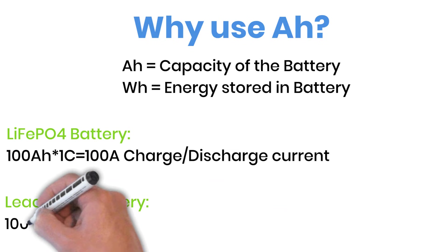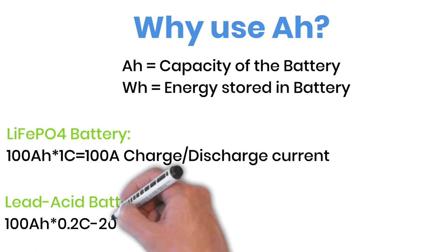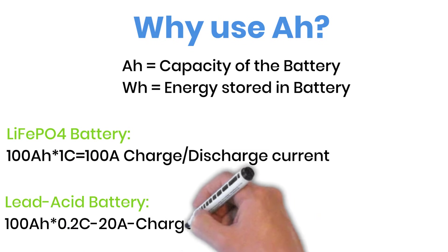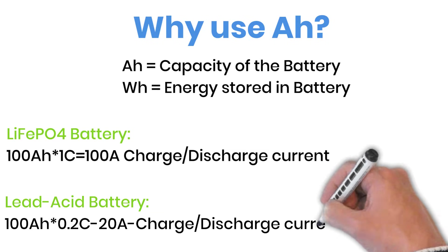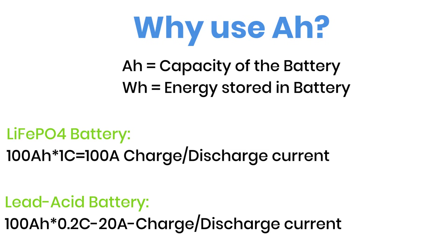For example, a 100 amp hour lithium battery can provide 100 amps, whereas a lead acid example here is shown as 20 amps under its normal conditions. Pushing higher currents than recommended will shorten the battery's life.